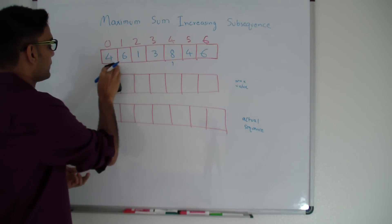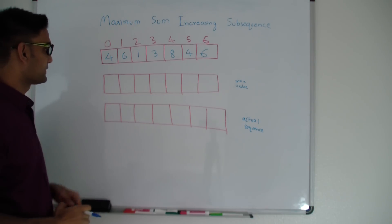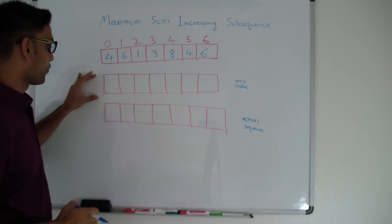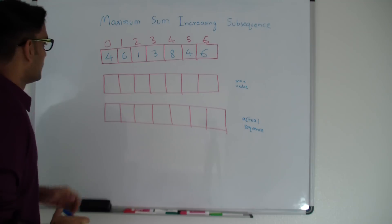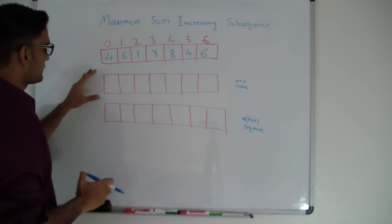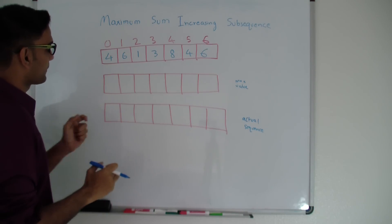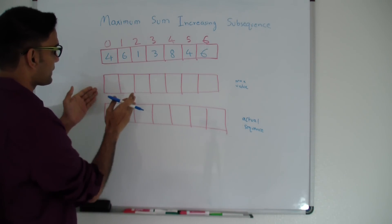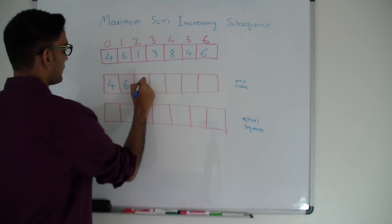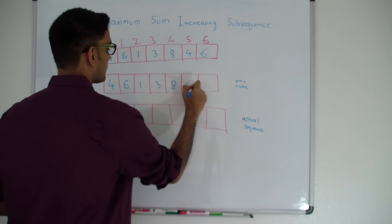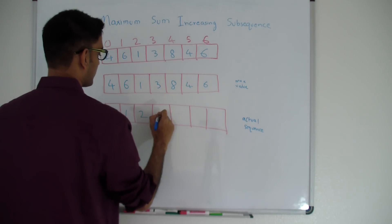So how do we solve this problem? We'll use dynamic programming. I have two arrays of the same length as the original array. One will store the maximum value, and the other will be used to get the actual sequence. Initially, I fill the max-value array with the original values, since the maximum sum increasing subsequence at every position is at least as much as the original value itself.